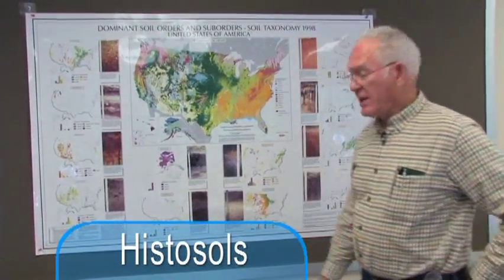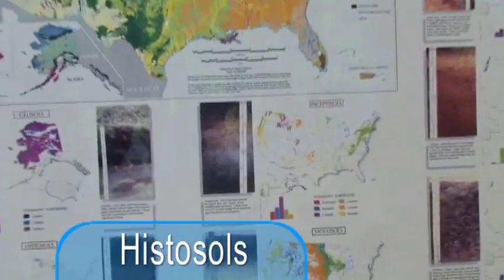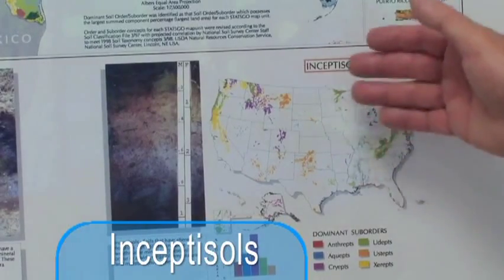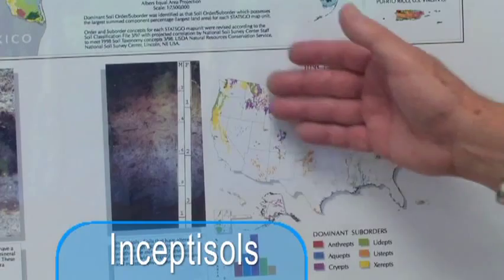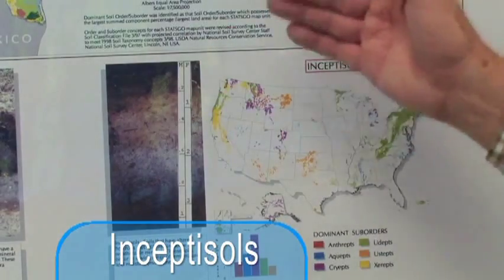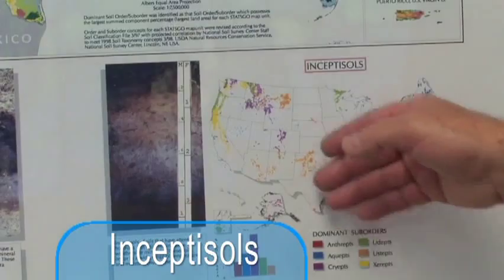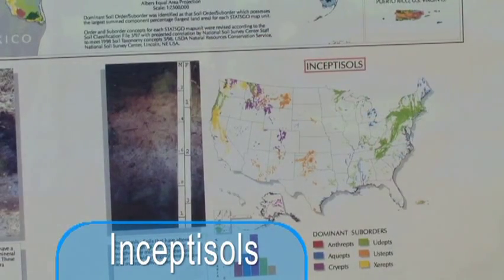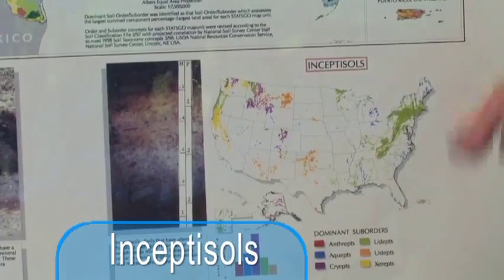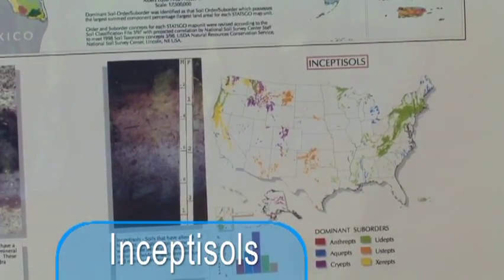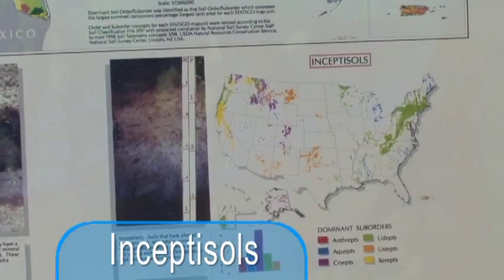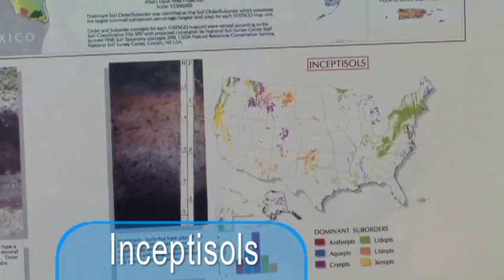The inceptisols represent those soils that have been altered but remain somewhat weathered. These are soils that occur under wide ranges of temperature and moisture conditions, so you see them scattered across the United States, usually associated with relief or terrain that doesn't let the soils develop to the same degree as the histosols or, more importantly, soils like the mollisols.